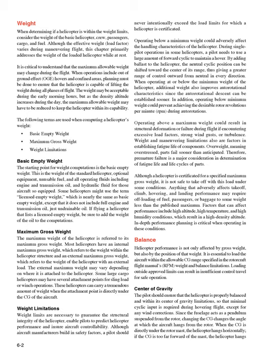Maximum gross weight: The maximum weight of the helicopter is referred to as its maximum gross weight. Most helicopters have an internal maximum gross weight, which refers to the weight within the helicopter structure, and an external maximum gross weight, which refers to the weight of the helicopter with an external load. The external maximum weight may vary depending on where it is attached to the helicopter. Some large cargo helicopters may have several attachment points for sling load or winch operations, and can carry a tremendous amount of weight when the attachment point is directly under the CG of the aircraft.